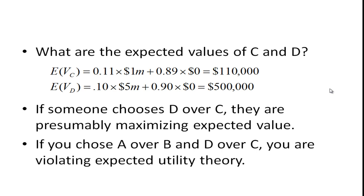So here, if someone chooses D over C, they're presumably maximizing expected value. So if you chose A over B and D over C, you're violating expected utility theory. You should have chosen, for example, B over A and D over C. You could also choose A over B and C over D, or be indifferent between all of them. But if you choose A over B and D over C, you are violating expected utility theory.